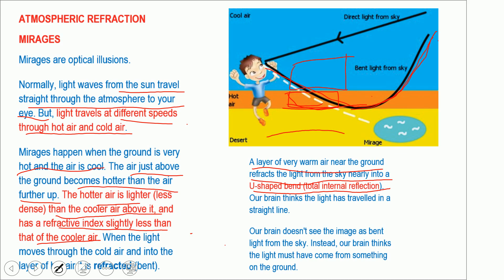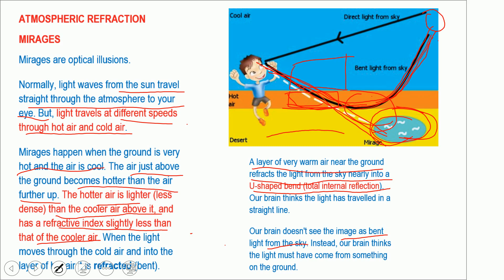Our brain thinks the light has traveled in a straight line. Even though the light actually came from the sky, bent near the ground, and then reached our eyes, we perceive it as coming from straight ahead. So in that location, we feel like there is a water body there. Our brain thinks the light must have come from something on the ground, and because of the heat, that something appears like water. This is the mirage.